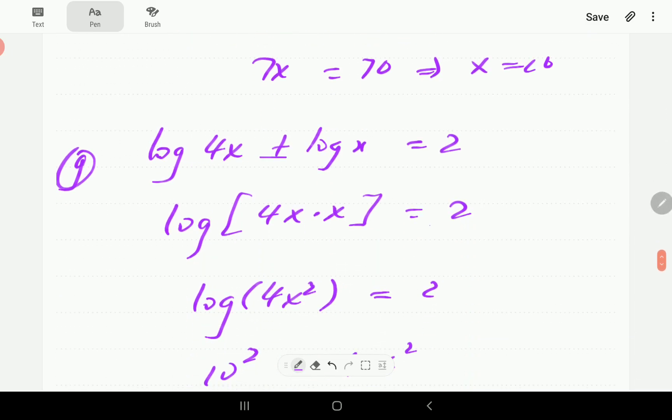Here again, we've got common log terms, the sum of two common logs. So if we combine them, there's going to be log of 4x squared.